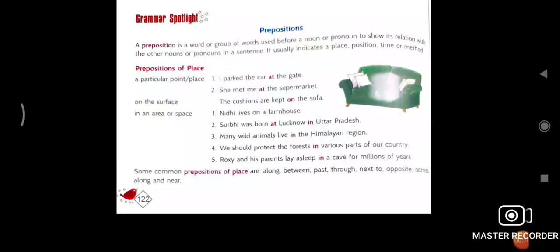Grammar Spotlight, page number 122. Preposition, maybe I have already told you. What is the definition of preposition here written? A preposition is a word or group of words used before a noun or pronoun to show its relation with the other nouns or pronouns in a sentence. It indicates place, position, time or any type of method. Here check preposition of place: at, on, in. In the sentence, it is used. I parked the car at the gate. She met me at the supermarket. It represents place.